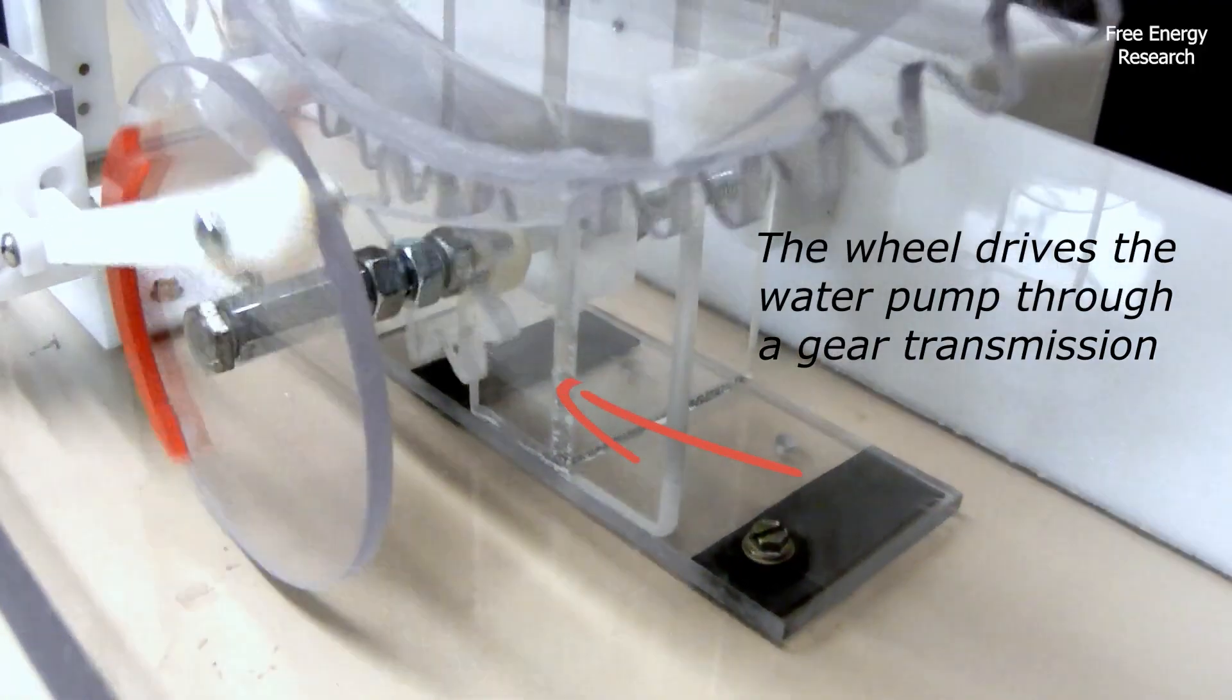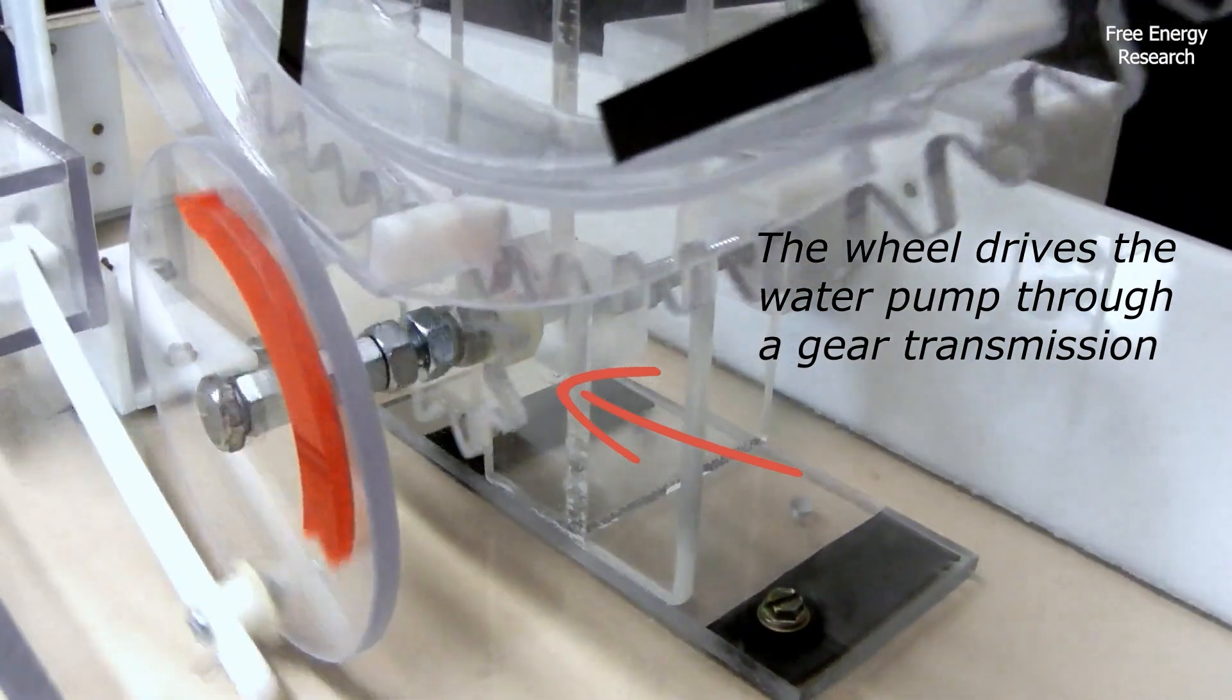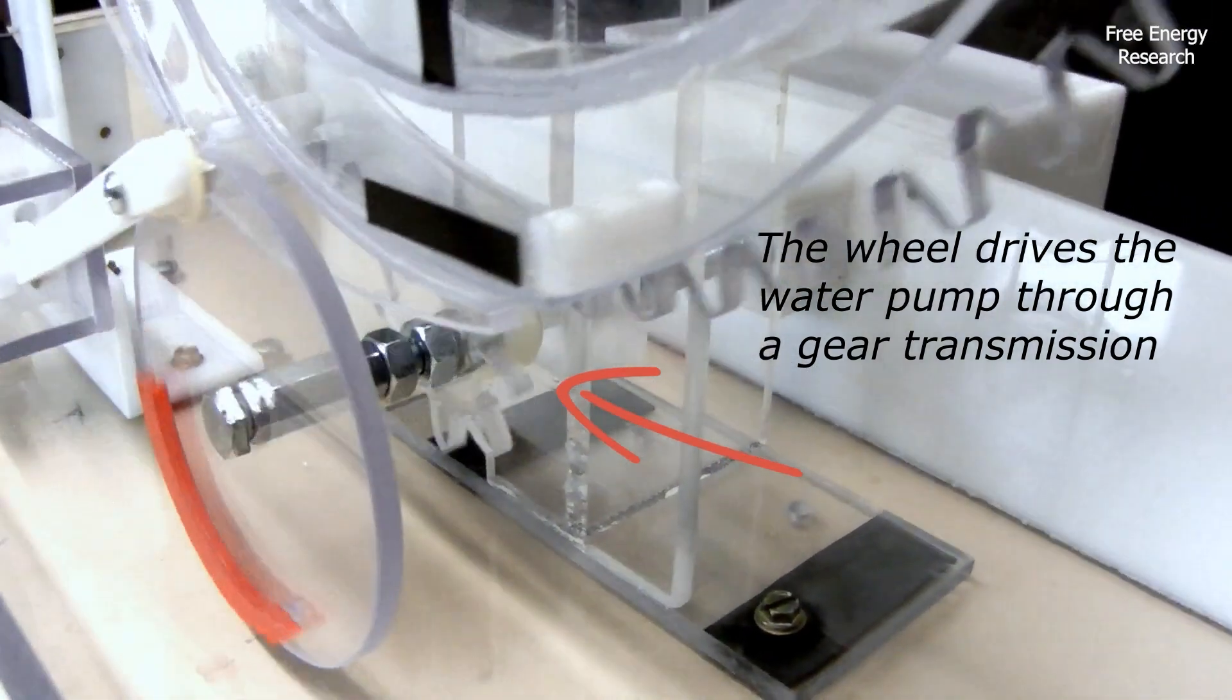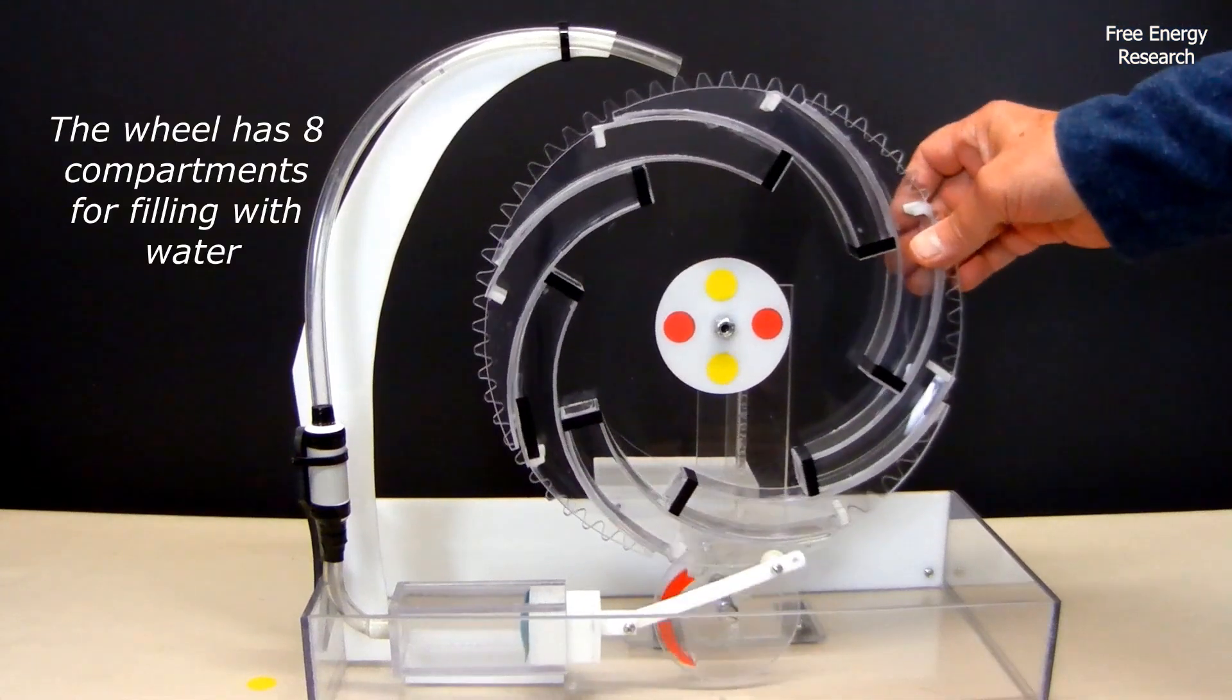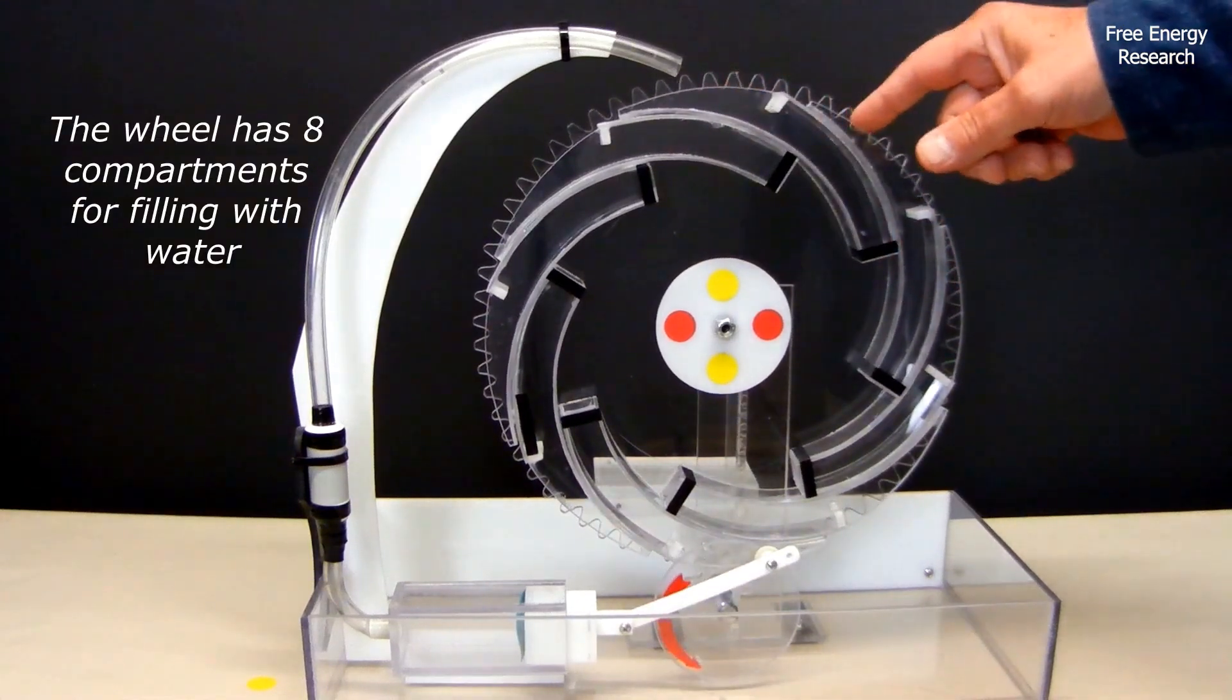Notice the gear transmission system that connects the wheel to the pump. This clever design converts the rotational energy of the wheel into pumping action, creating a self-sustaining loop of motion, or so it seems.